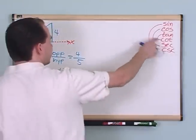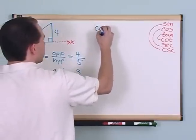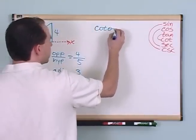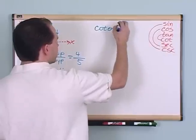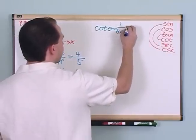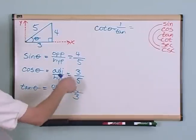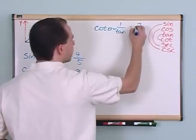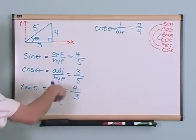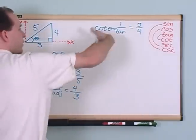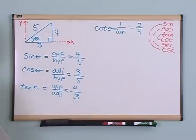So, in order to find cotangent, which is over here, cotangent of theta is one over tangent. So I just look down, what did I find for tangent? I found four-thirds. One over four-thirds is just three-fourths. You just flip it over when you have one over that, because you can take the bottom, flip it over, multiply by the top, you get three-fourths.